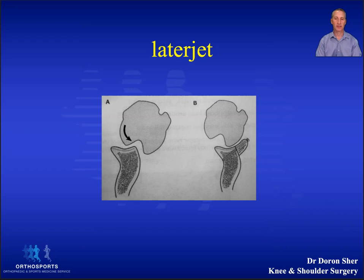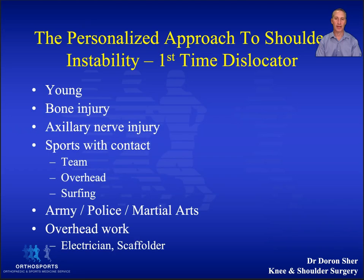This restores the missing bone from the glenoid. The capsule should then be advanced to create a bumper and tighten the shoulder. Lastly, the conjoined tendon functions as a sling resisting anterior inferior translation of the humeral head.